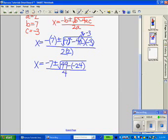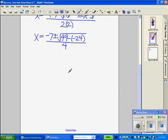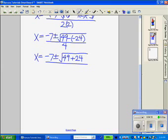So I still have a set of parentheses in there. So I want to get rid of those parentheses. So let's write it one more time. x equals negative 7 plus or minus the square root. And you know that a minus a negative is the same as adding a positive. So I'm going to write 49 plus 24 because you're adding the opposite. All over 4.